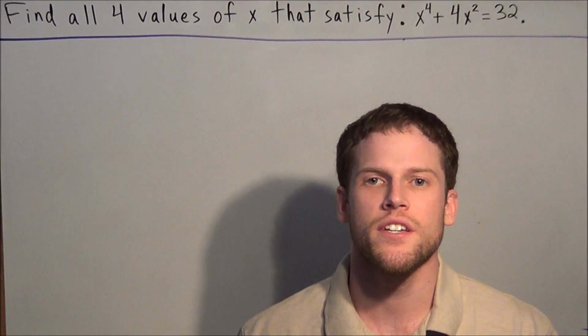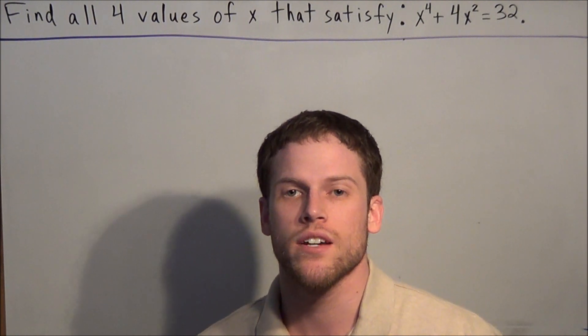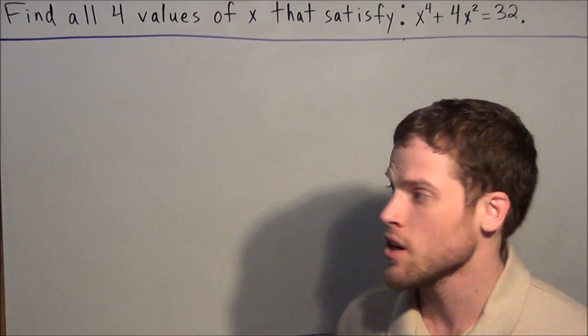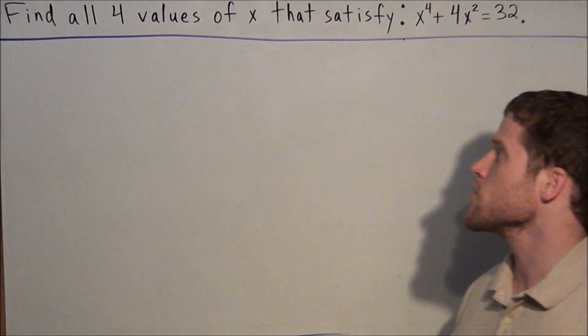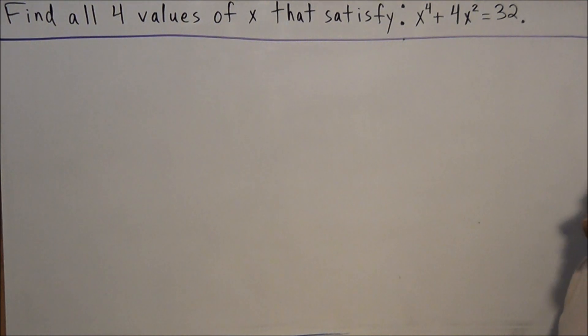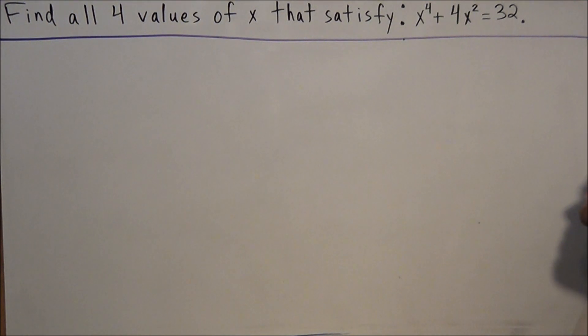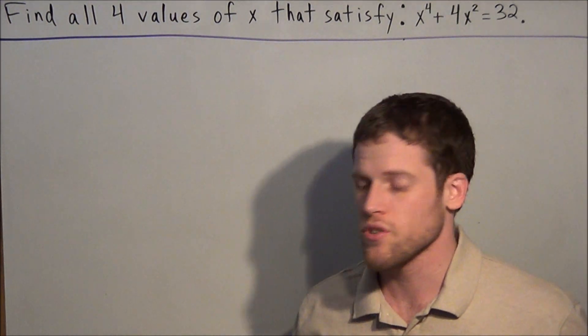Hi, my name is Mr. D, and today I want to take a look at finding the roots of a polynomial equation. So we have: find all four values of x that satisfy x to the fourth plus 4x squared equals 32.